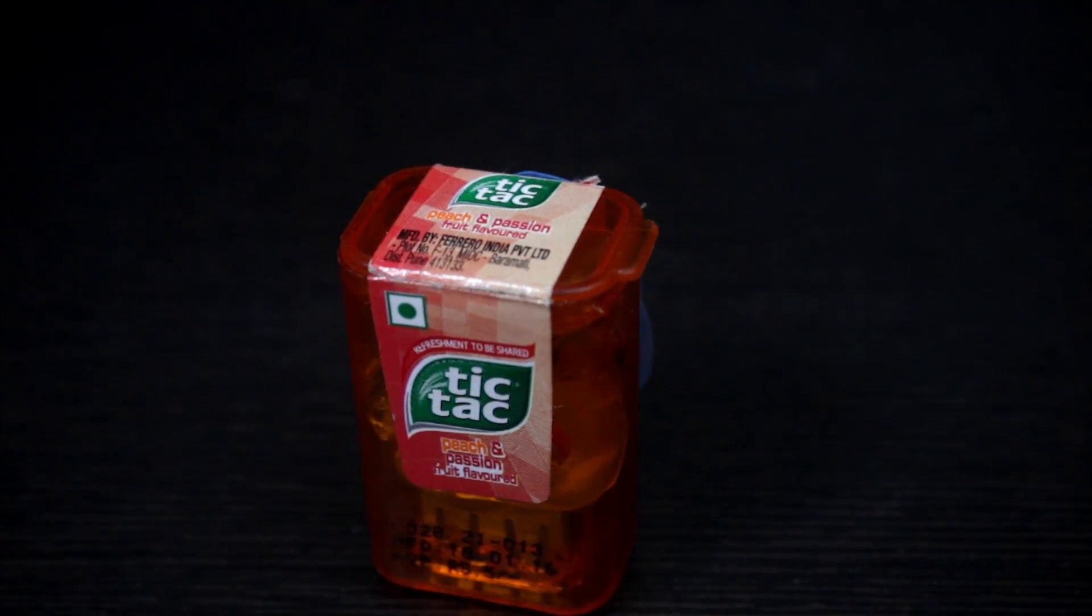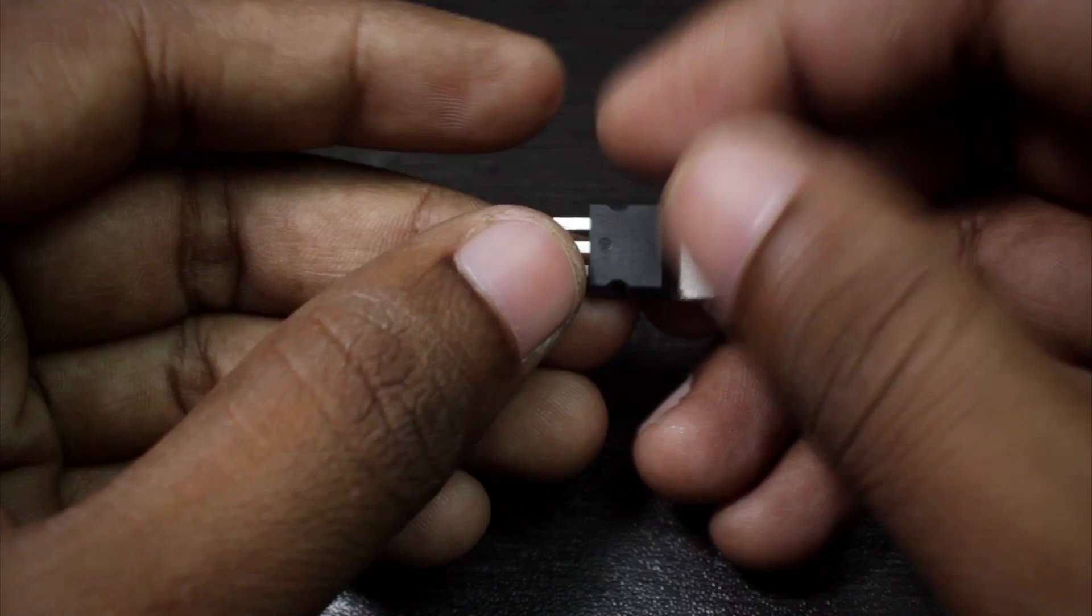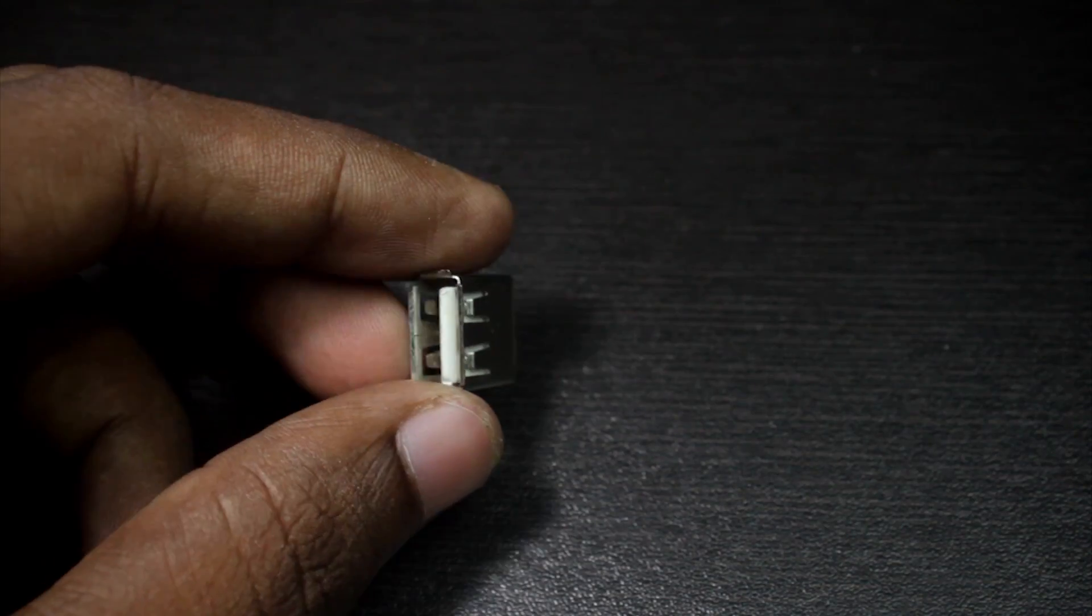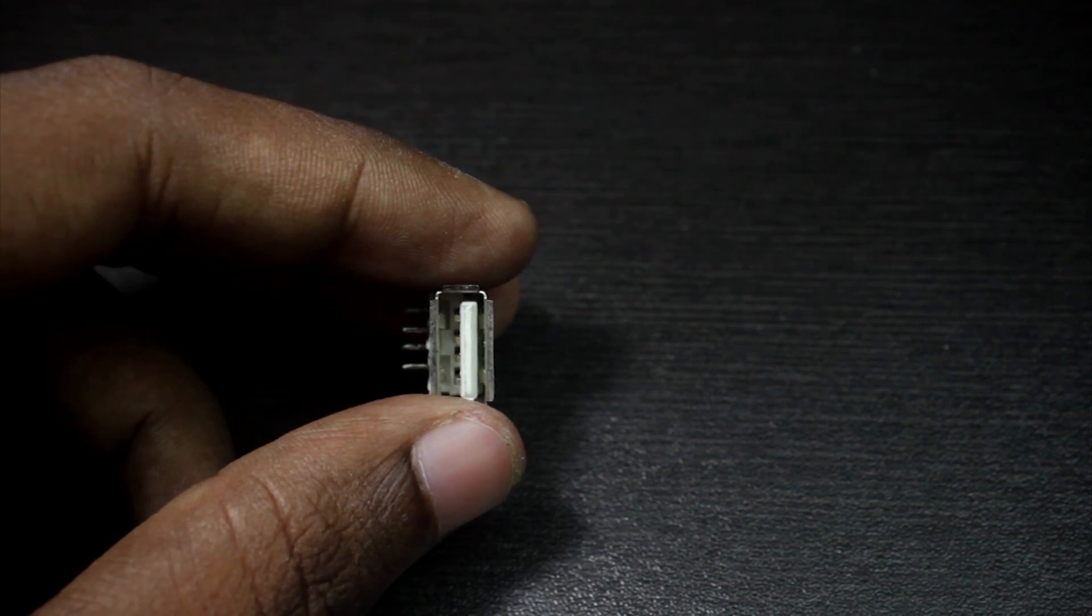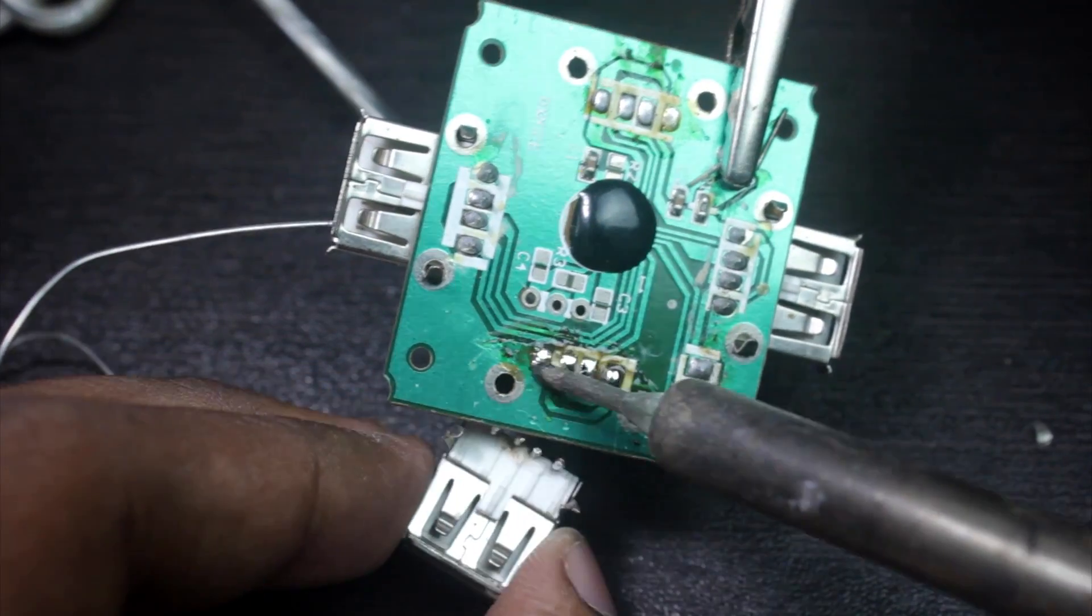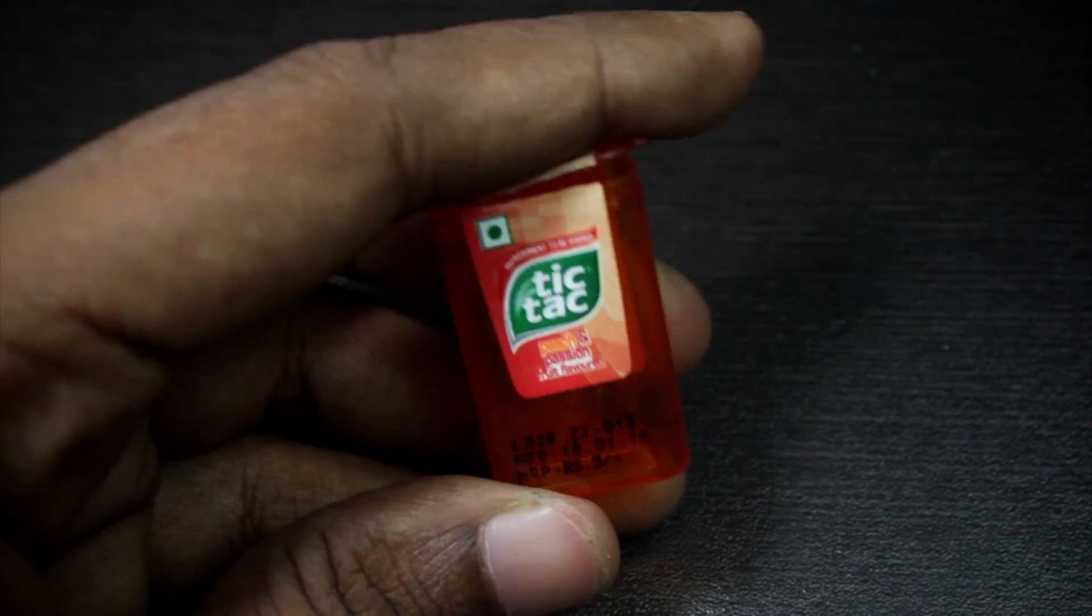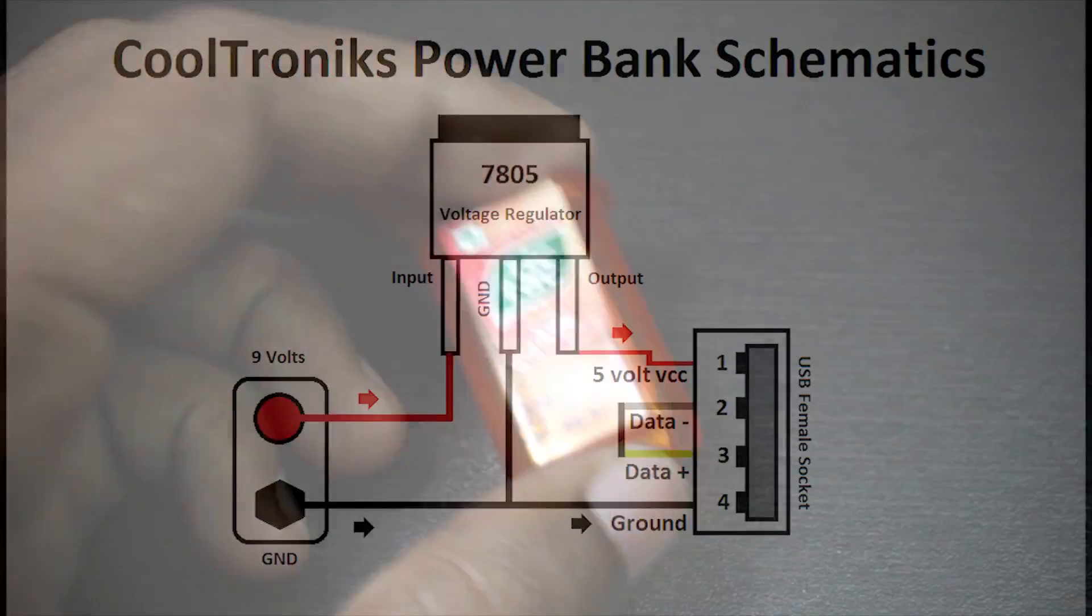Hey guys, in this video we are going to make a simple portable power bank. The things we need to make this power bank are a 7805 voltage regulator, a female USB socket which was taken out from an old USB hub, a battery connector, a 9 volt battery, and a case to fit it all together.